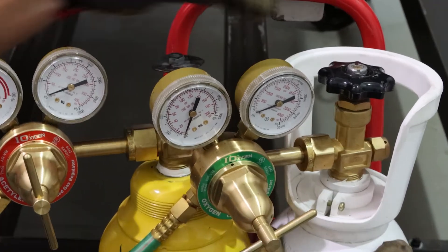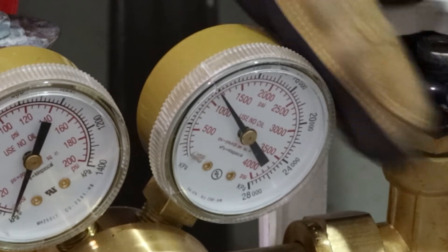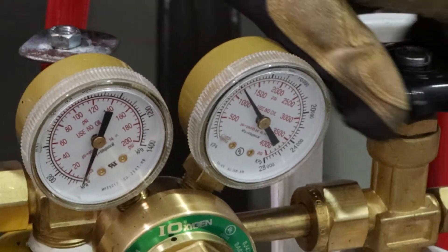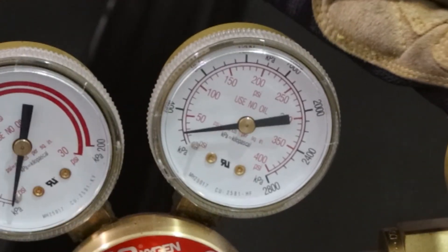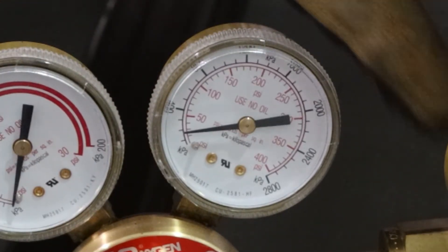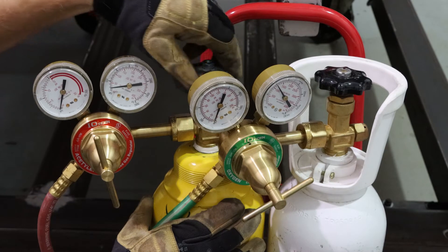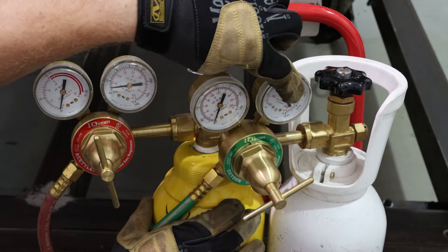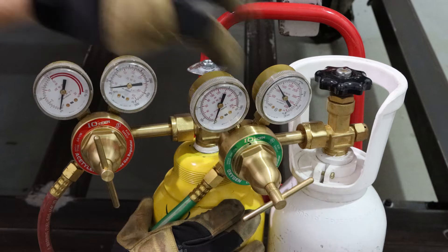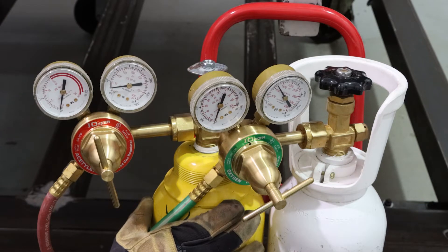And we do that by cracking these little valves at the top. Yes, this is a makeshift one. The old one was not very healthy. Now we open these bottles, we can see on this dial and this dial, we're actually reading the cylinder pressure in there.